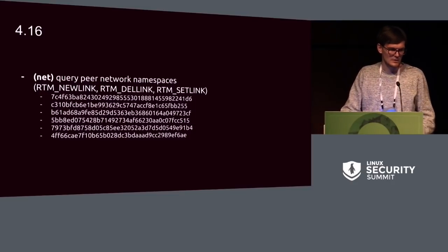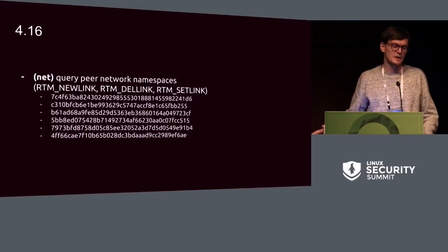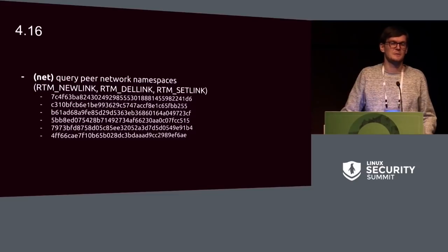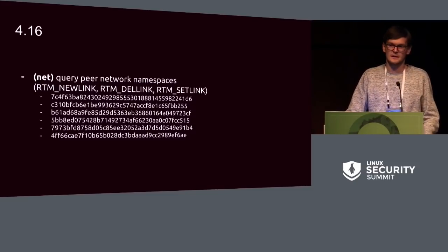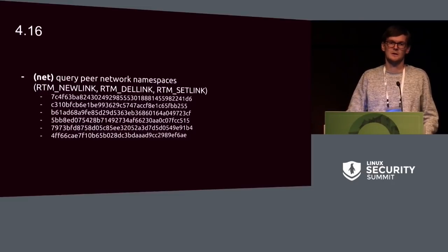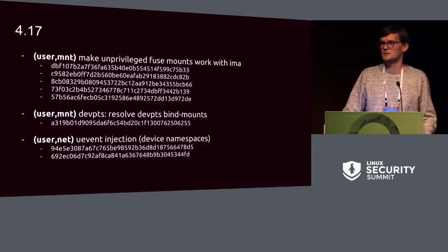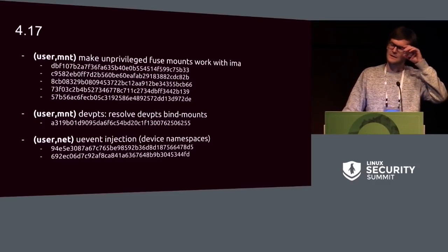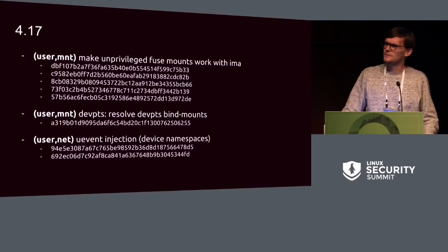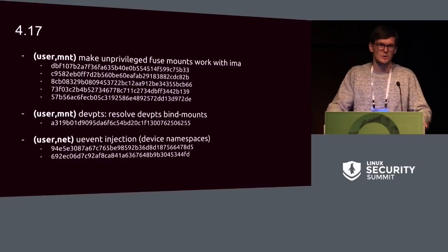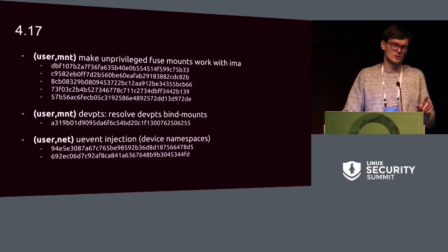4.16 added new infrastructure to query network namespaces by passing a network namespace identifying property. RTM_NEWLINK, RTM_DELLINK, and RTM_SETLINK allow you to pass a property for a network namespace and operate on it without having to setns() into it — which is quite performance-relevant. In 4.17, unprivileged FUSE mounts were made to work with IMA, work done by Eric together with Mimi. It fails by default, but this was one of the final blockers to making unprivileged FUSE mounts from non-initial user namespaces work.